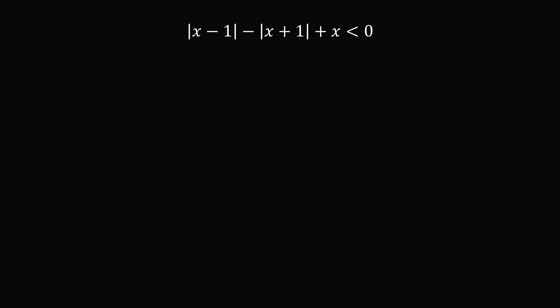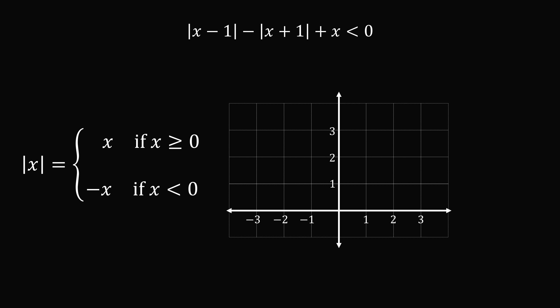Let's solve Problem 1. To solve this problem, we will recall the definition of the absolute value of x. The absolute value of x is equal to x if x is greater than or equal to 0, and it's equal to the opposite of x if x is less than 0. So if x is greater than or equal to 0, the graph of y equals absolute value of x will be y equals x. When x is less than 0, it'll be equal to the opposite of x, so we have a v-shaped graph.